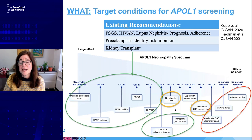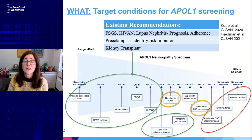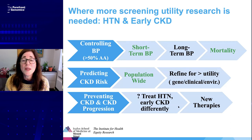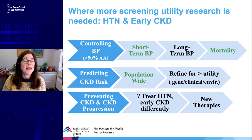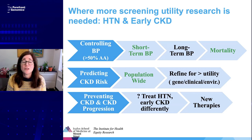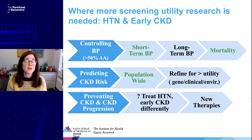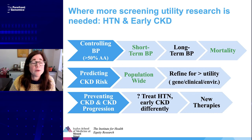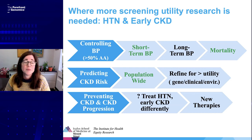The areas in orange — where we need to do further research — include people with non-diabetic kidney disease, particularly people with hypertension and people with early kidney disease from other causes. Starting out in terms of controlling high blood pressure: who should be screened among people who have high blood pressure? Does it make sense to screen everybody with African ancestry or those who consider themselves African-American? Because more than 50% of people with African ancestry and Black people have hypertension, this is a really big group.